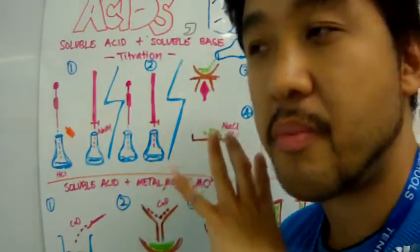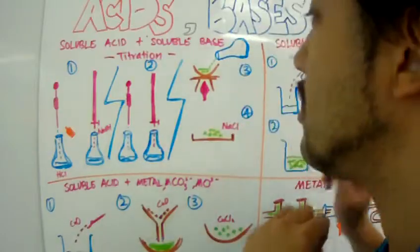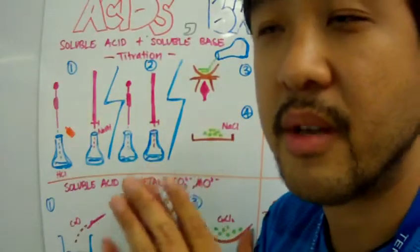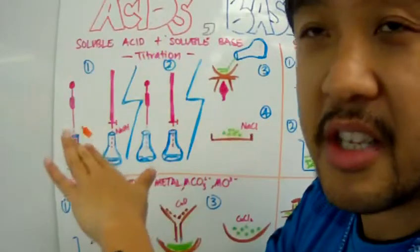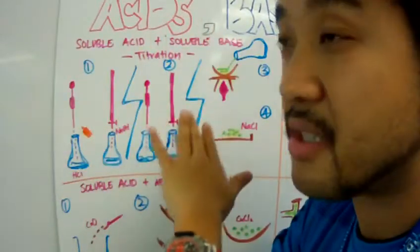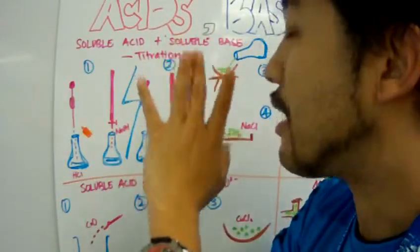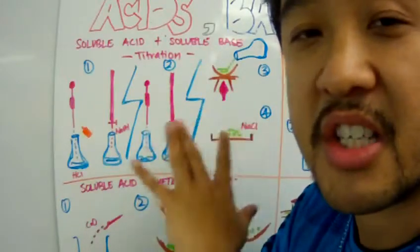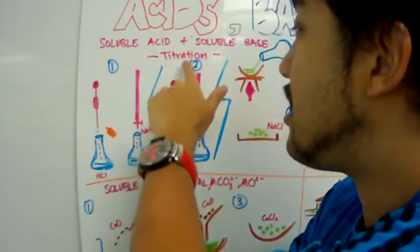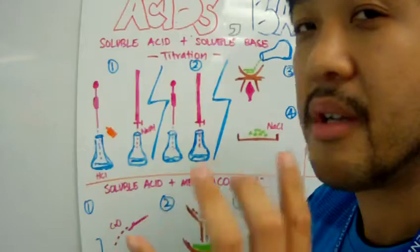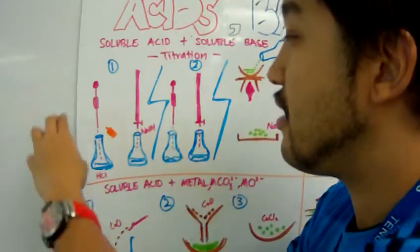The procedure to make this is that you put an exact amount of acid of known concentration into your conical flask, and you put an indicator such as methyl orange. What you see in this solution is that it should be pink.